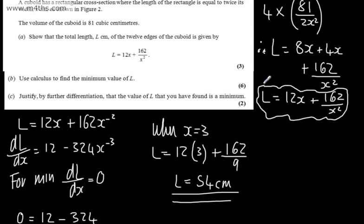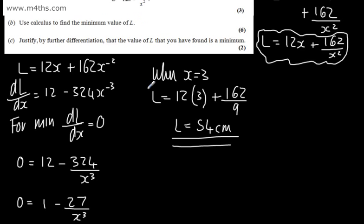In part C, for two marks, we need to justify by further differentiation that the value of L you have found is a minimum. So if we pick it up just here, we've got an expression for dL dx. We need the second derivative, d2L by dx squared.